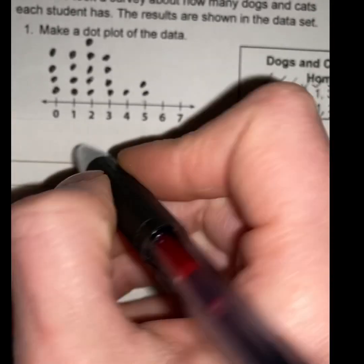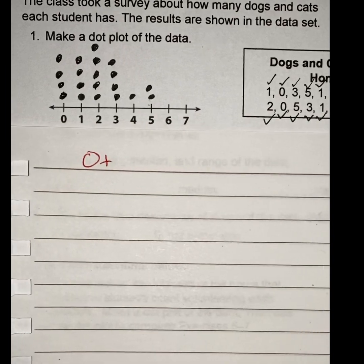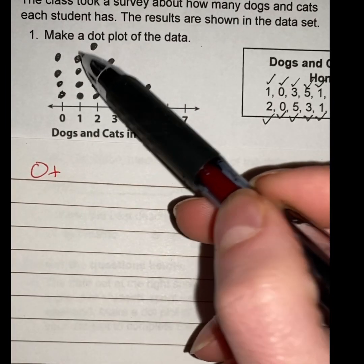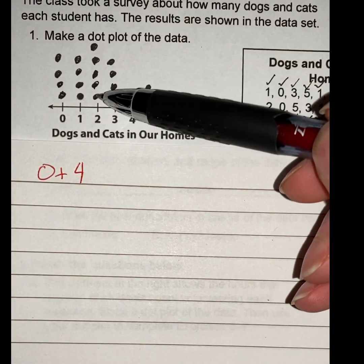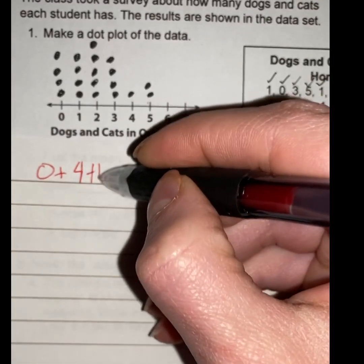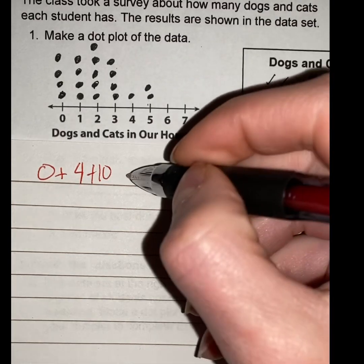Now one times one, two, three, four—one times four is four. Then two times one, two, three, four, five—two times five is ten. Then three times one, two, three, four—three times four is twelve.